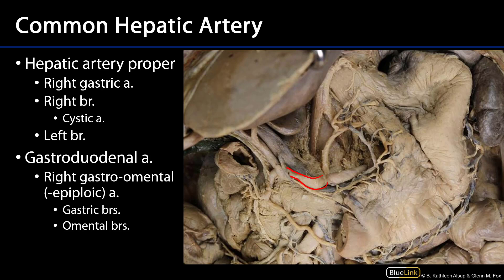The hepatic artery proper — there's a little bit of torsion to it, with a vein interrupting our view — but we can see one of the early branches of HAP: the right gastric artery, coming down along the lesser curvature of the stomach. That right gastric artery anastomoses with the left gastric artery to supply the lesser curvature of the stomach. So any of the gastric arteries are lesser curvature branches, and you can see the right gastric coming off from the hepatic artery proper.